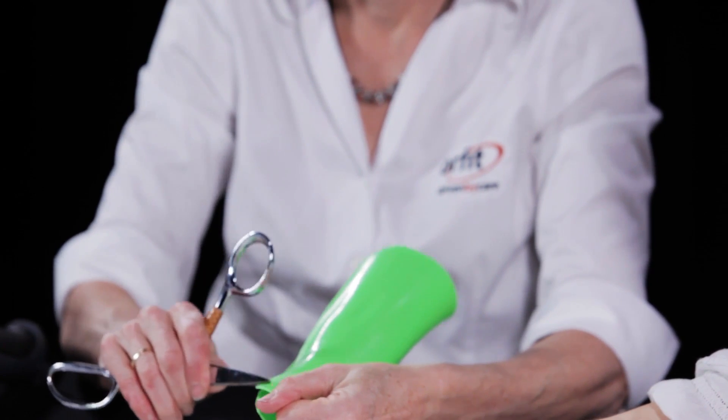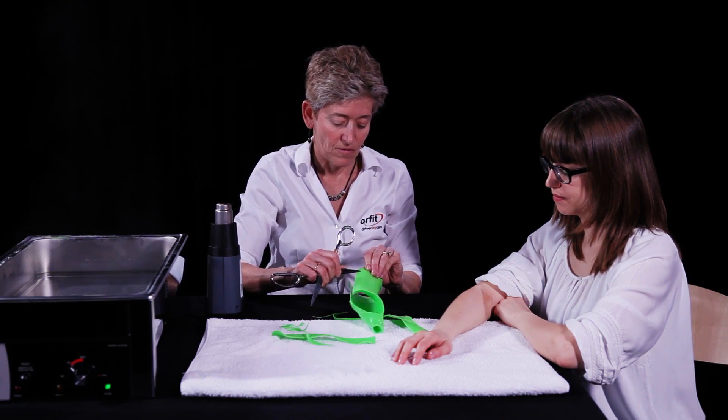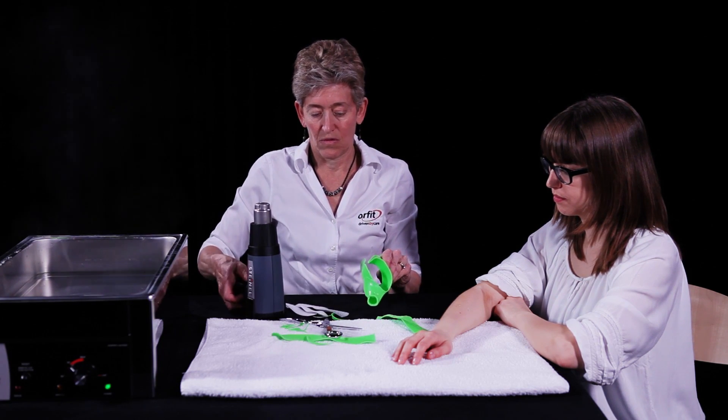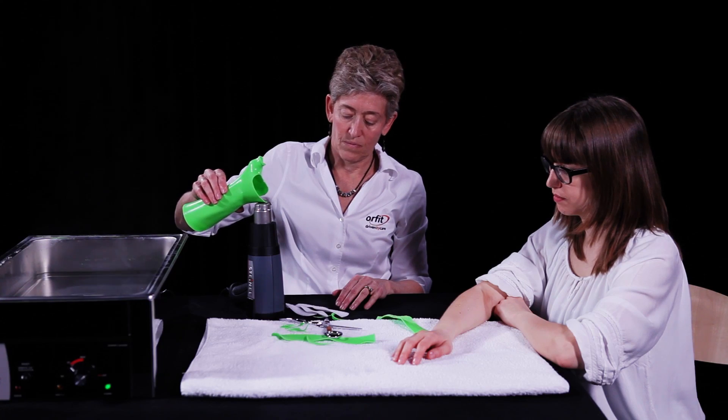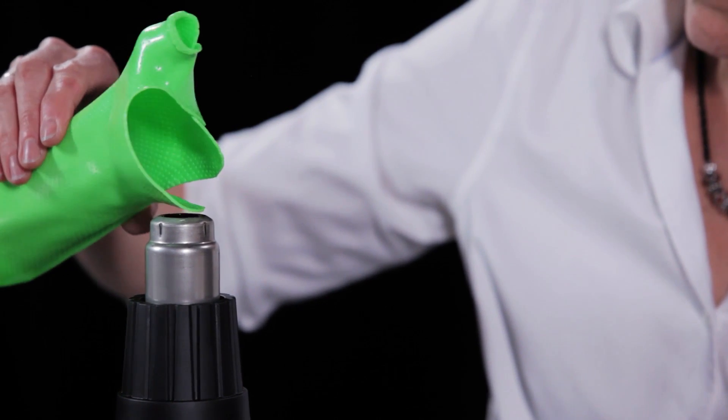Velcro loop straps can be attached directly to the thermoplastic material. Orfit Colors NS has a coating which must first be removed by scraping with scissors. Heat each spot with a heat gun briefly. Make sure not to overheat the material as it will lose its shape.